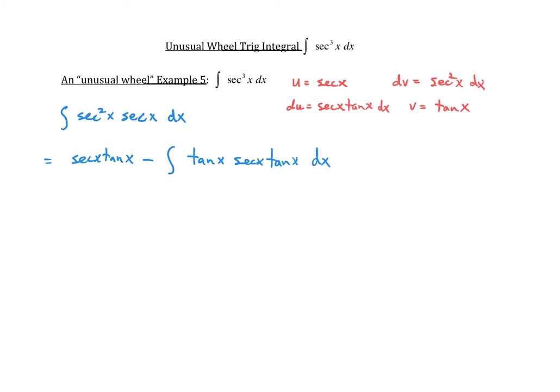Remember, all of this was equal to the original integral of secant cubed x dx. Let me simplify this second integral: we get secant x tangent x minus the integral of secant x times tangent squared x dx.